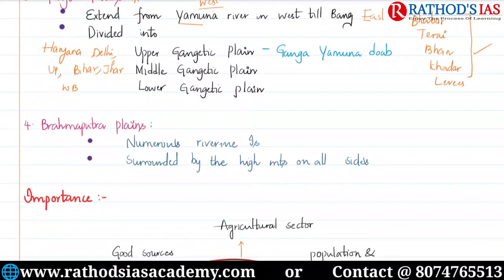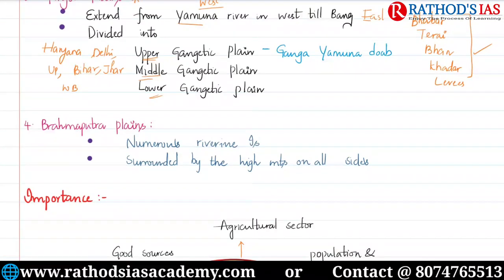The Ganga Plains are also divided into upper Ganga Plain, middle Ganga Plain, and lower Ganga Plain. The last regional division is the Brahmaputra Plains. Here we can see numerous riverine islands. One important island is Majuli Island. The Brahmaputra Plains are mainly surrounded by high mountains on all sides.